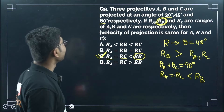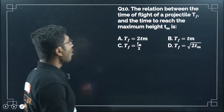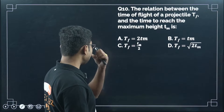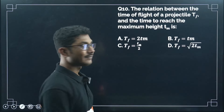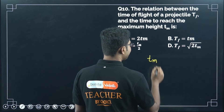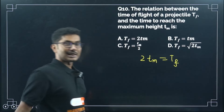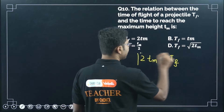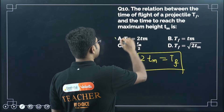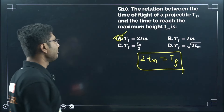Question 10: what is the relation between total time of flight Tf and time to reach maximum height Tm? We know that Tf = 2·Tm, because the time to reach maximum height equals the time to come back down. So the total time of flight is twice the time to reach the maximum position. This is a fundamental, easy question.